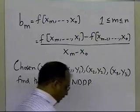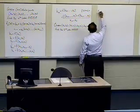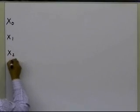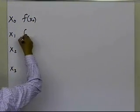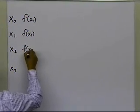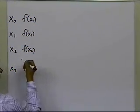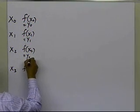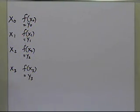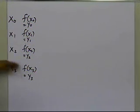Let's look at this on the next board. We have x0, x1, x2, and x3. We are given the value of the function at these four data points: f(x0), f(x1), f(x2), and f(x3), which is the same thing as y0, y1, y2, and y3. We write it in terms of the f function because that's how it appears in most books, so y is simply a function of x given at these four data points.